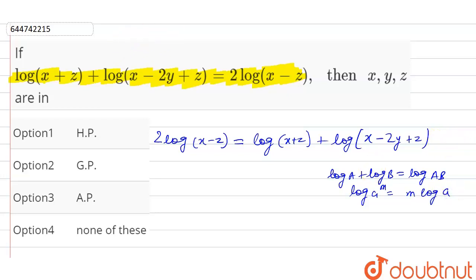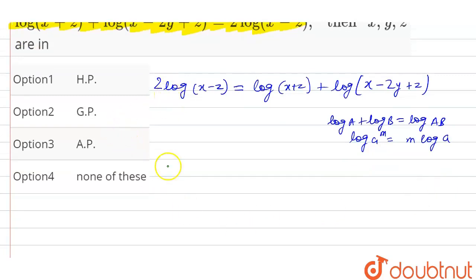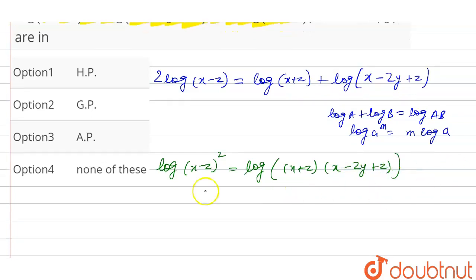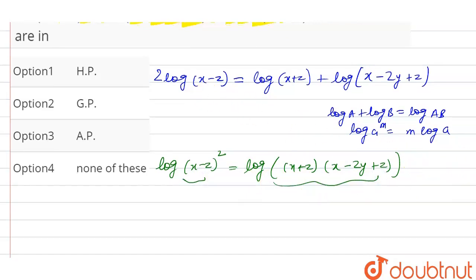So by using these properties, this can be written as log x minus z whole square by using this property. And log a plus log b, so log x plus z times x minus 2y plus z. So now we can equate these two terms inside the log.